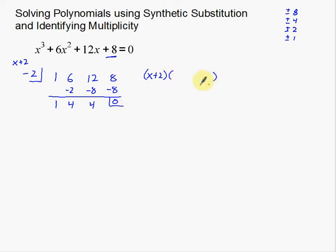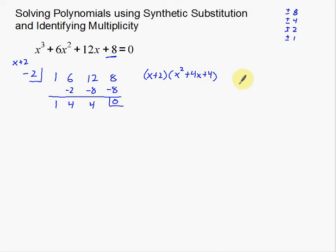With remainder zero, I know this divides evenly. If I divide the original polynomial by x plus 2, the synthetic substitution result also tells me the quotient. So the result is x squared plus 4x plus 4 — that's what's left after factoring out x plus 2.